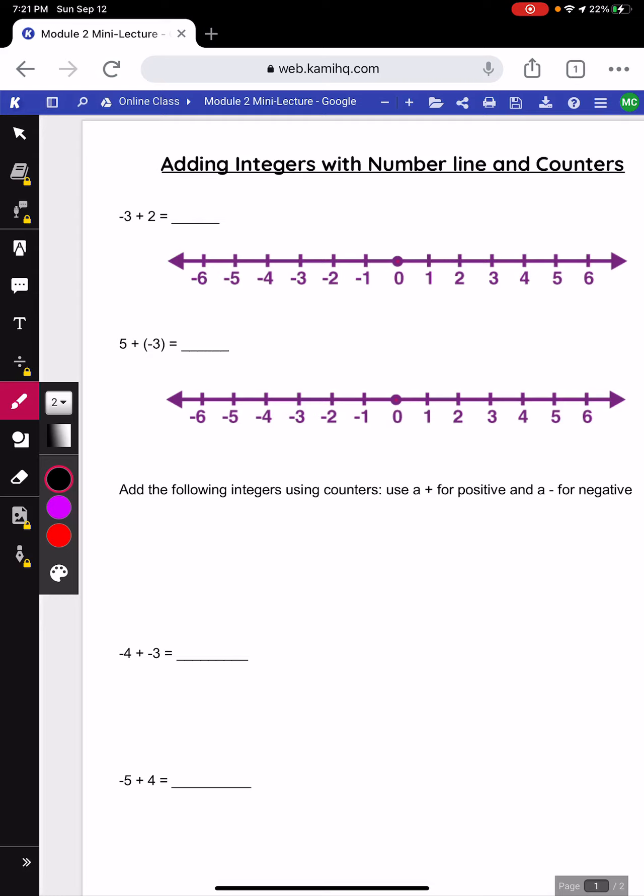Alright everyone, now that we have talked about integers and what they are, we are going to start adding integers using some manipulatives. So the first thing we're going to do is show it on a number line. Our first addition statement is negative 3 plus 2.